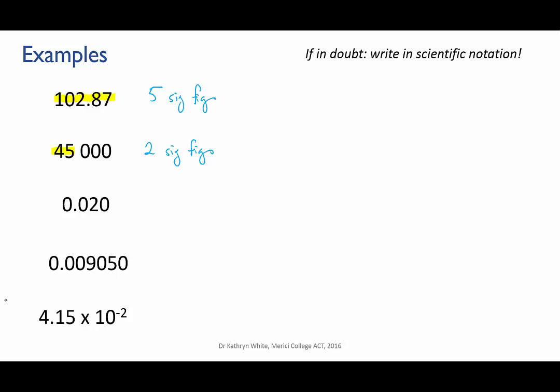0.020. This number starts with two leading zeros, which are not significant. We start counting when we get to the first non-zero digit, that's the 2, and the trailing zero is significant this time because the number has a decimal point. So two sig figs here.